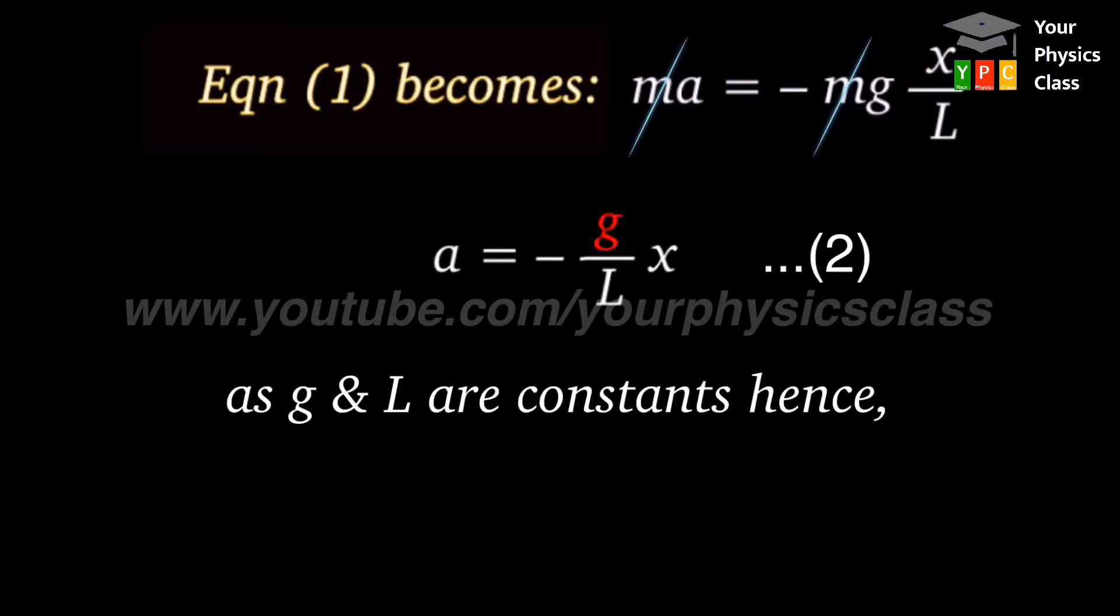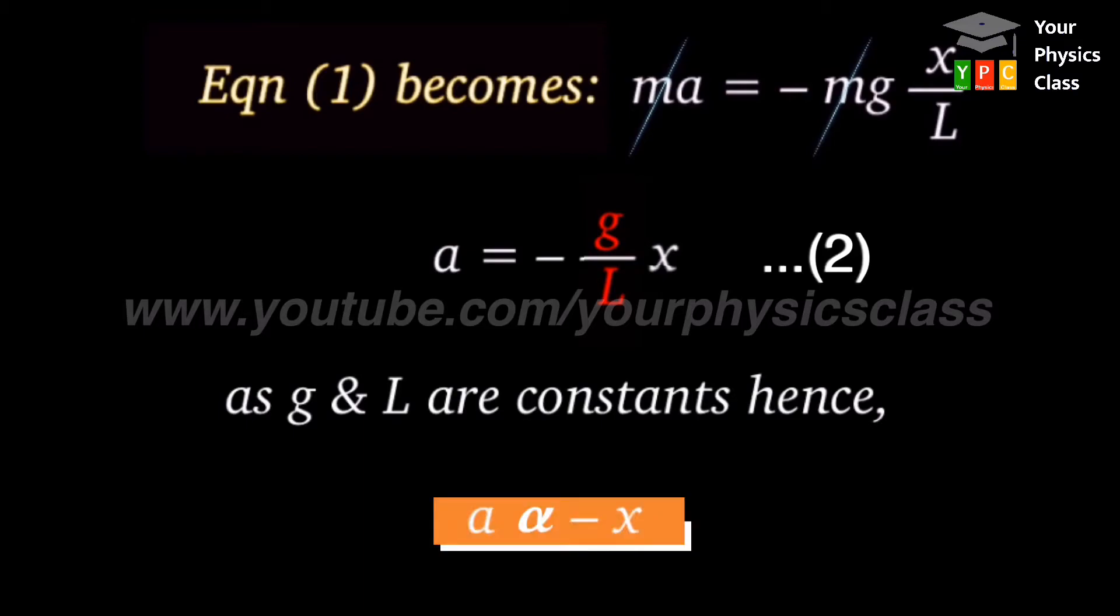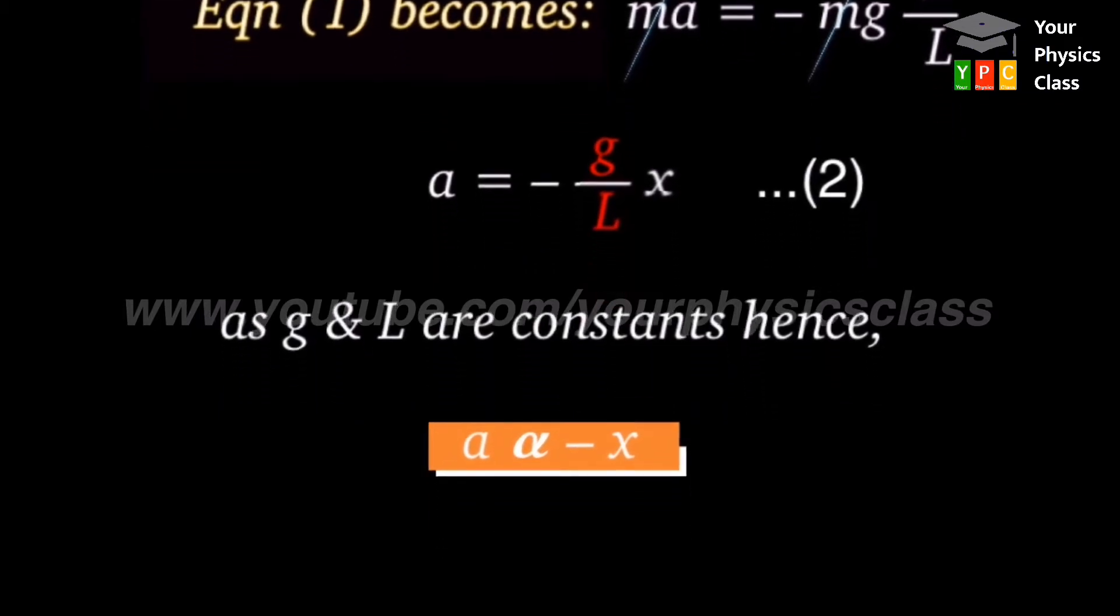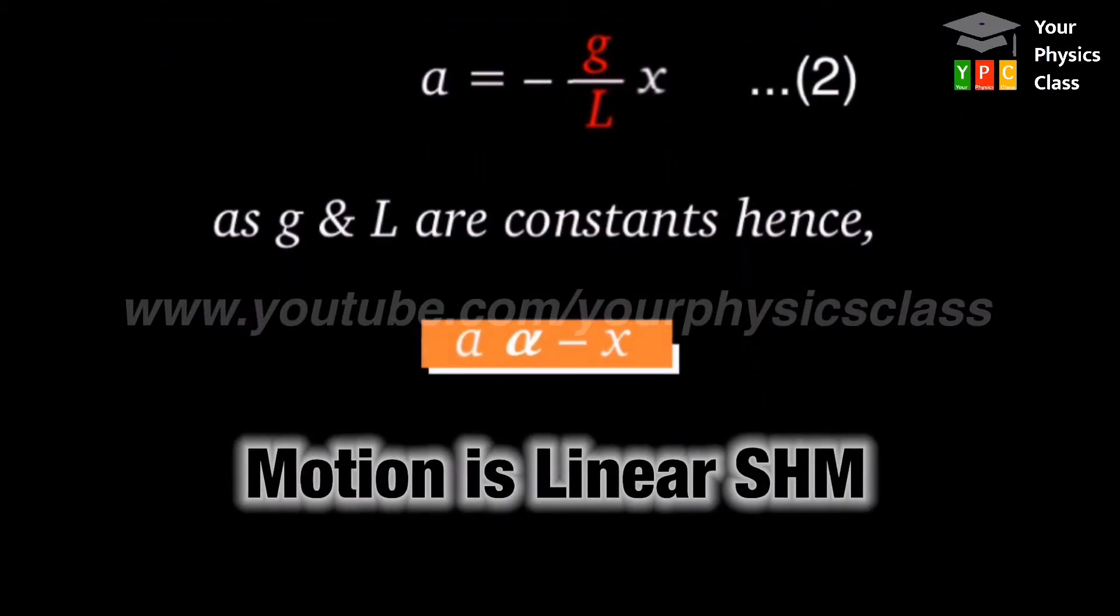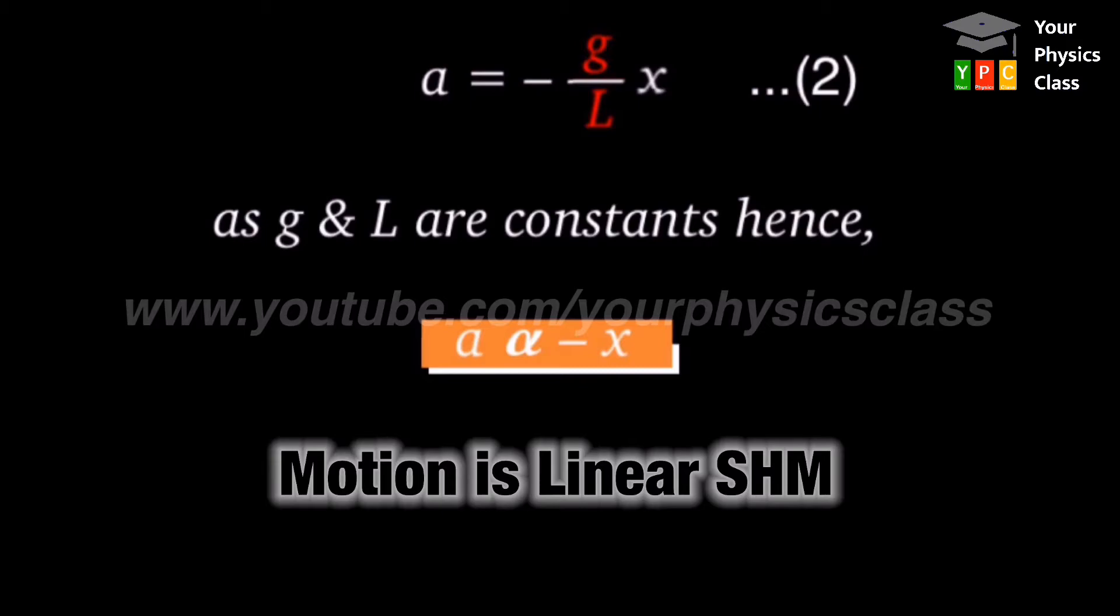As g and L are constant, hence acceleration is directly proportional to negative of displacement. This is necessary condition for linear SHM. This statement proves that motion of the bob is linear SHM.